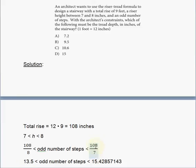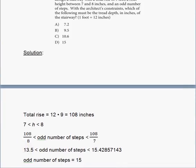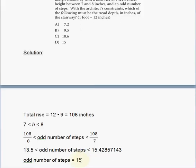So the odd number of steps must be above 13.5. And 108 divided by 7, using your calculator, will give you 15.42857143. So the odd number of steps must be below 15.42. But what's the odd numbers—how many odd numbers are there between 15.42 and 13.5? Only one. Because 14 is an even number, and 15 is the only odd number that's between these two boundaries. So the odd number of steps must be 15. In other words, there are 15 heights of a certain value between 7 and 8 that will make up a sum of 108 inches, and that's the total rise.